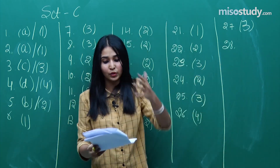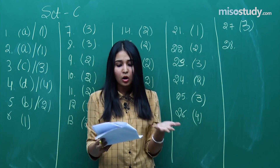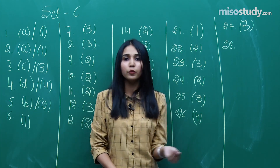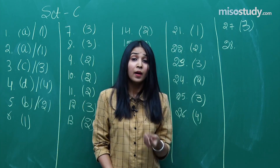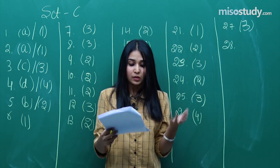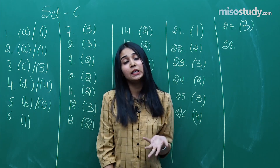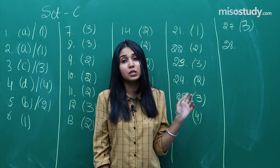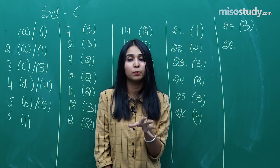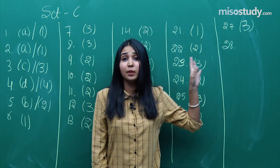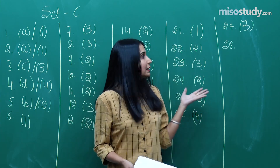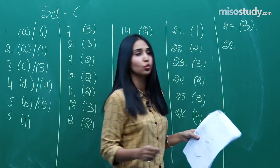Question number 28 was a simple formula-based question from the equilibrium section — again from ionic equilibrium. That's now three equilibrium questions I've seen, all from the ionic part. Based on my calculations, the answer for question 28 is option 2.